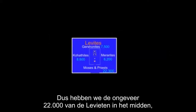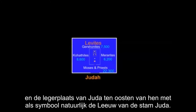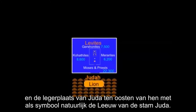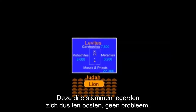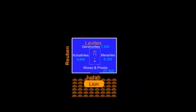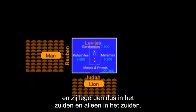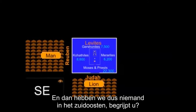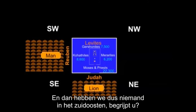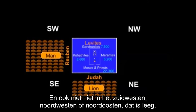So we have the 22,000 or so of the Levites in the middle, and we have the camp of Judah to the east — its ensign was, of course, the lion of the tribe of Judah. Those three tribes assigned to Judah would be camped to the east. Reuben was to be to the south, his ensign was a symbol of the man, and they camped to the south and only to the south. And then we have no one in the southeast — nor the southwest, northwest, and northeast. Those are vacant.